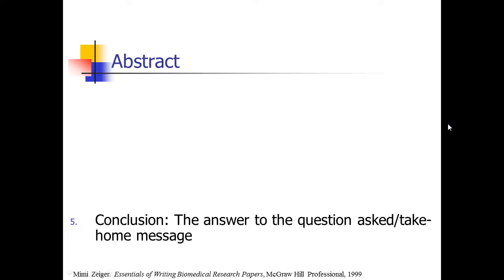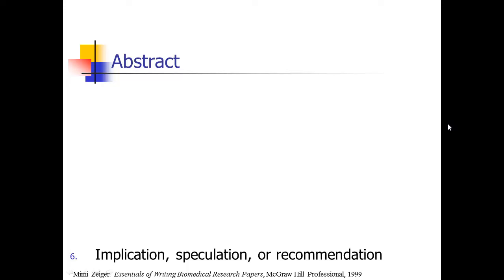There's one more thing that is very important to include. As Mimi Zeiger puts it, some kind of implication, speculation, or recommendation. That means one sentence at the end of your abstract where you go a little beyond the results and give people that 'why should I care' message — what's the implication, why does this research matter? Give something a little more big picture so the reader understands why your research is important.